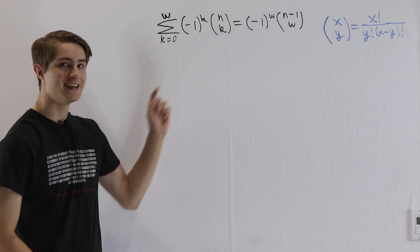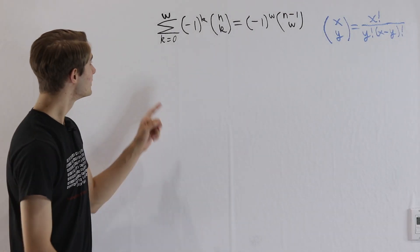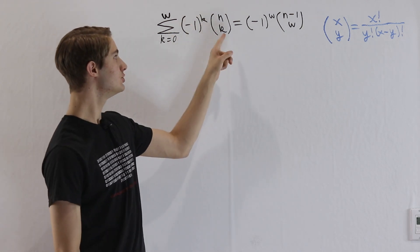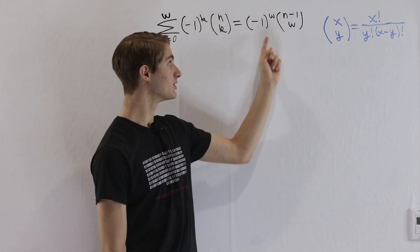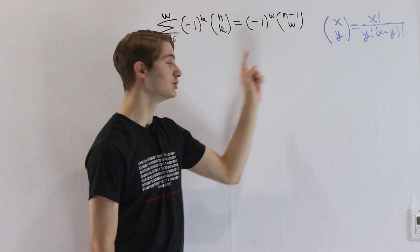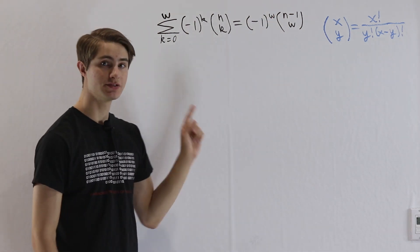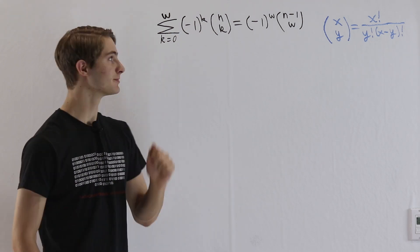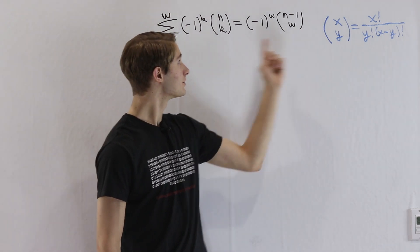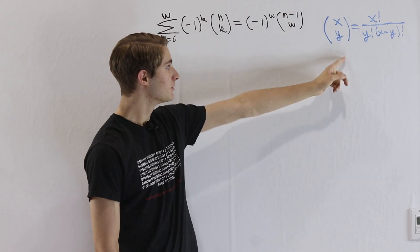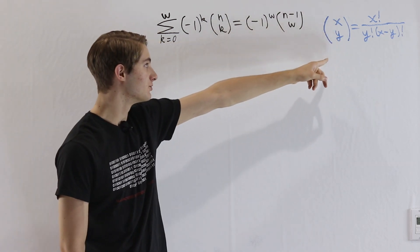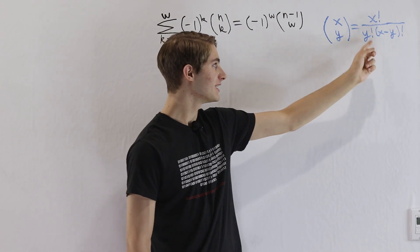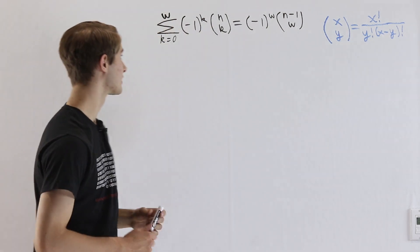We are going to prove this identity: the sum from k equals 0 to w of negative 1 to the k times n choose k equals negative 1 to the w times n minus 1 choose w. In order to figure out this identity, we're going to use the formula x choose y equals x factorial divided by y factorial times x minus y factorial.